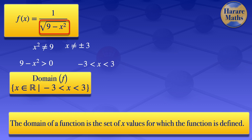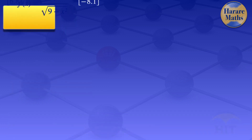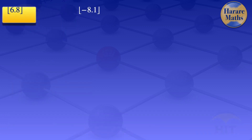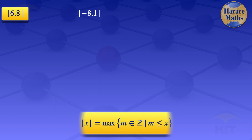I will now move on to the next question — the floor value of 6.8. By definition, the floor value of x is the greatest integer that does not exceed x. So in this case, we are looking at the greatest integer that does not exceed 6.8, and that integer is 6. So the floor value of 6.8 is 6.